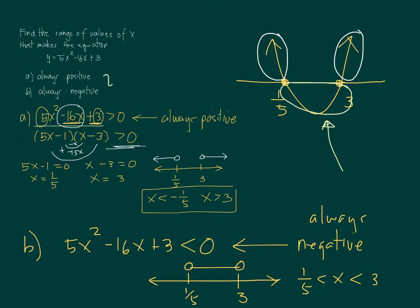If you just want to identify the range of values of x, what are these values of x that will make it always positive or always negative, always remember that it's just asking for, always positive means greater than 0, and always negative means less than 0. So these are the two answers that we obtained, and this is for the B. That's it.